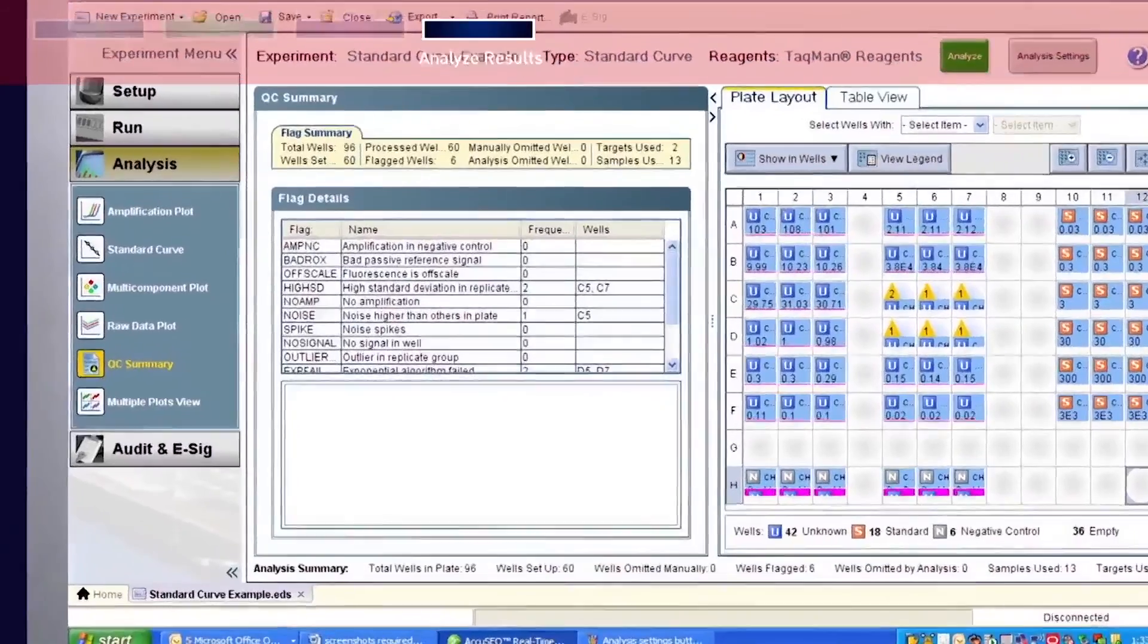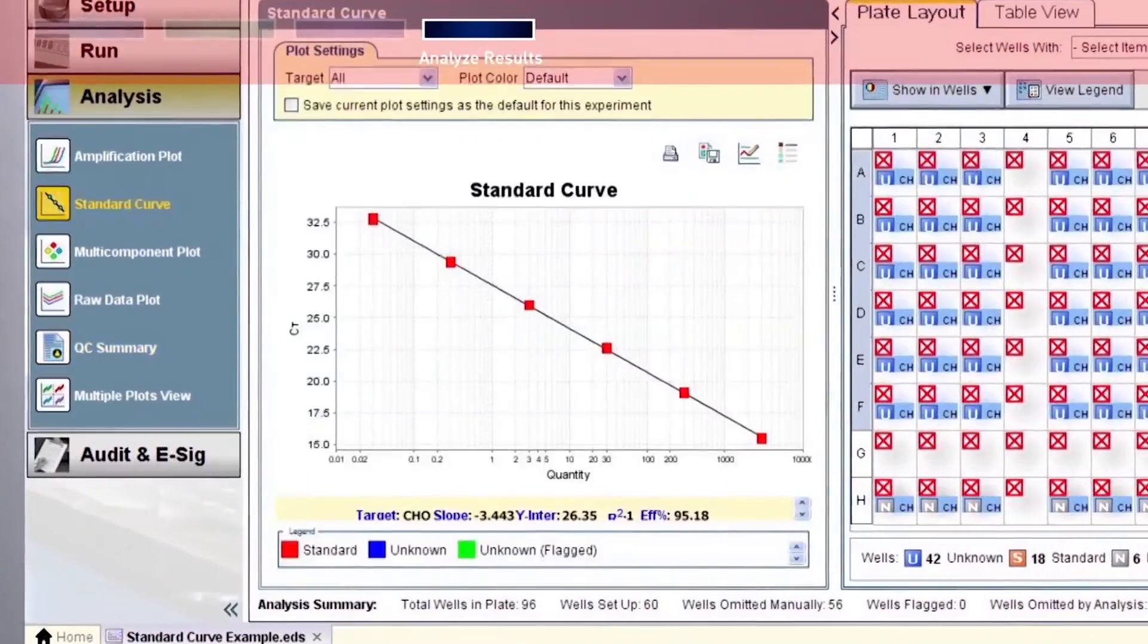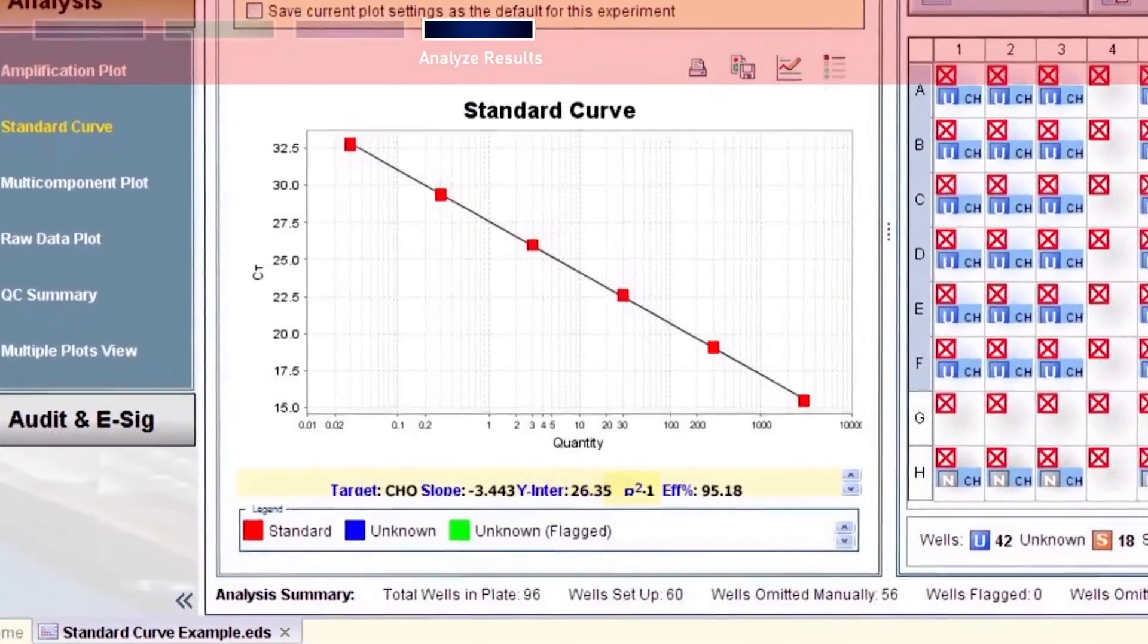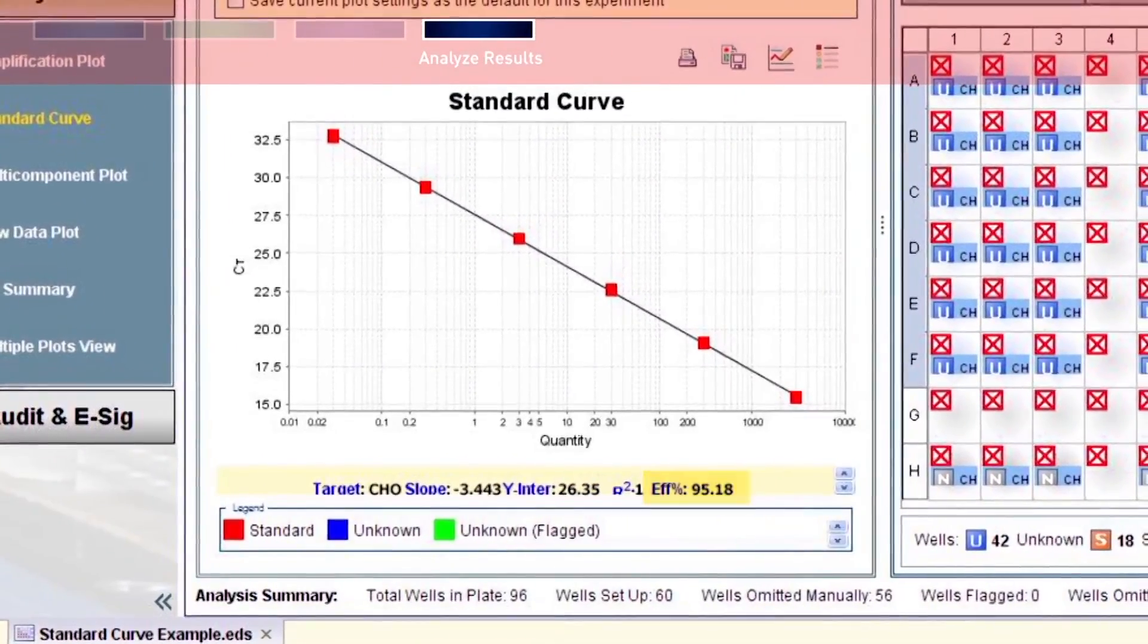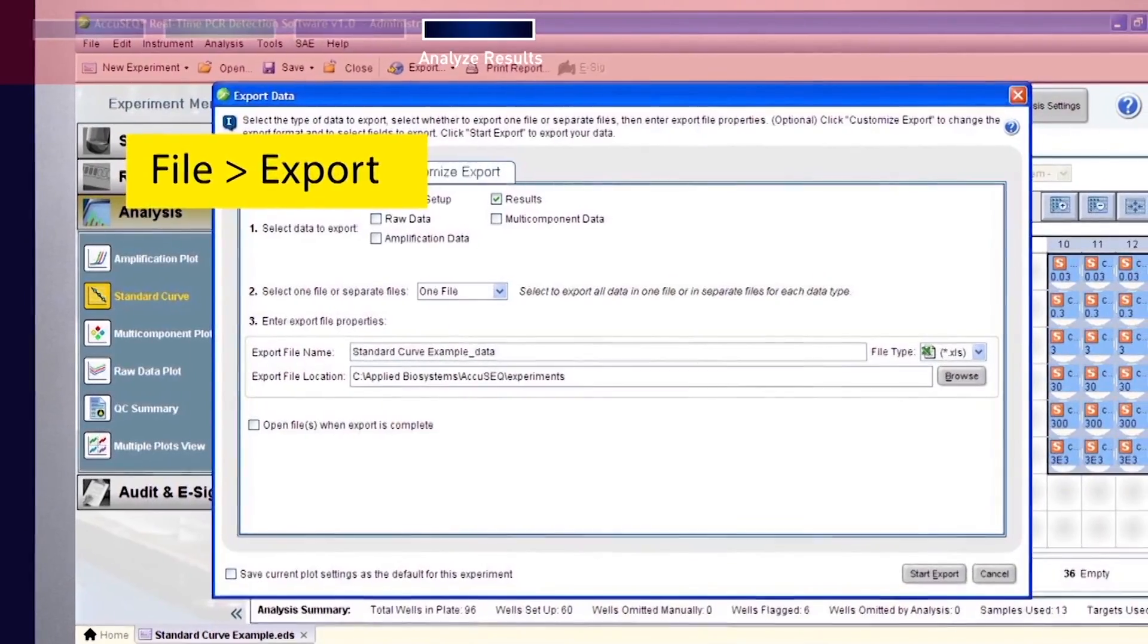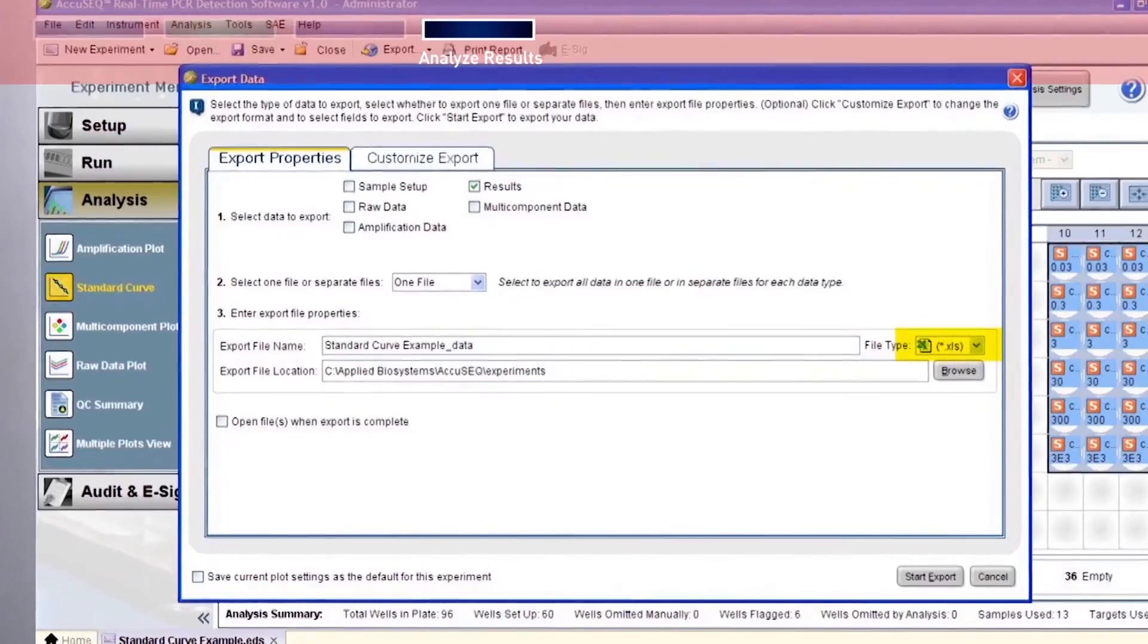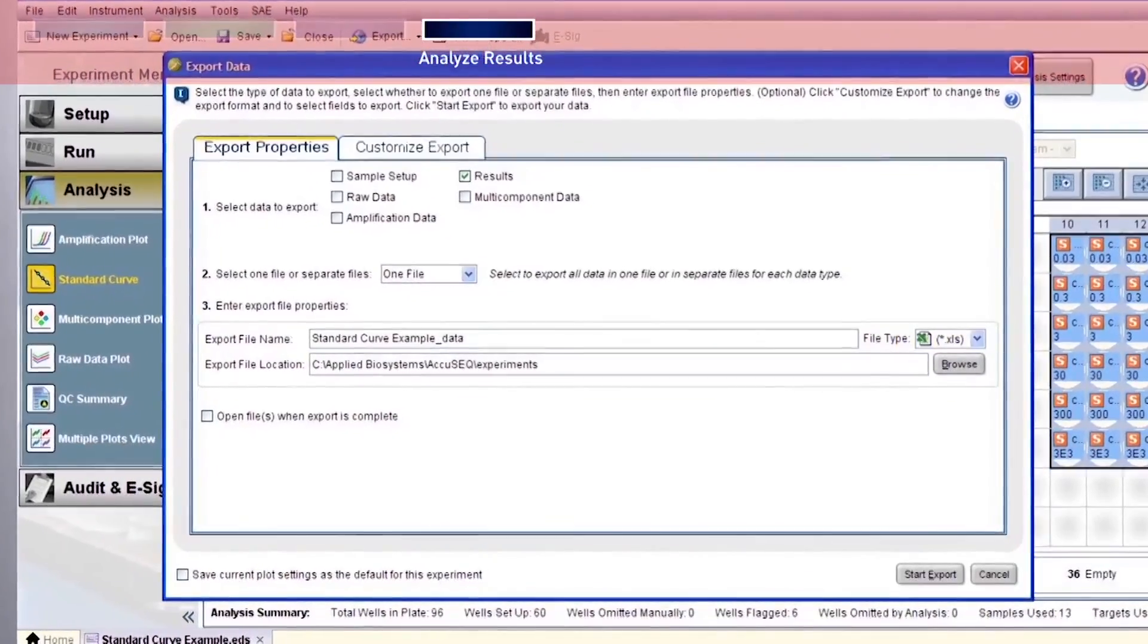Review the data and analyze the flag summary. Verify the values for the slope, intercept, R-squared, and efficiency. To export the database, select File, Export. In the export data menu, select file type XLS, then click Start Export.